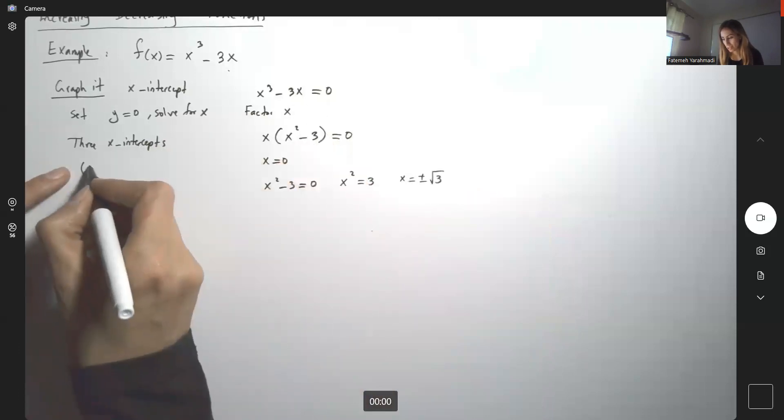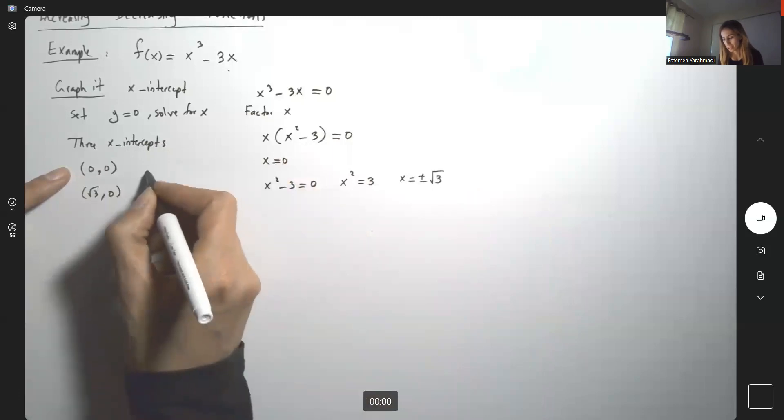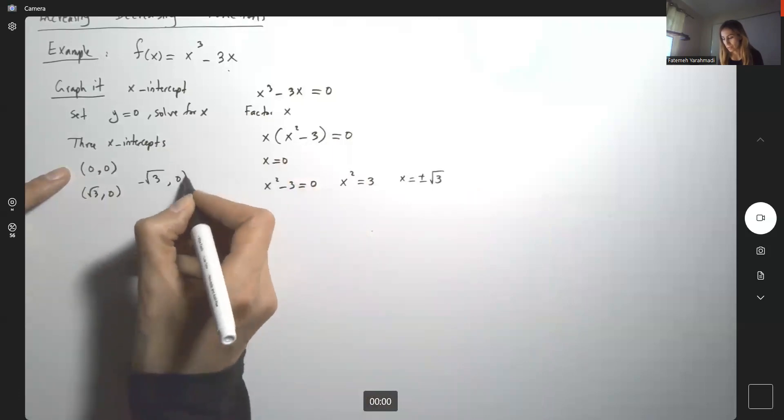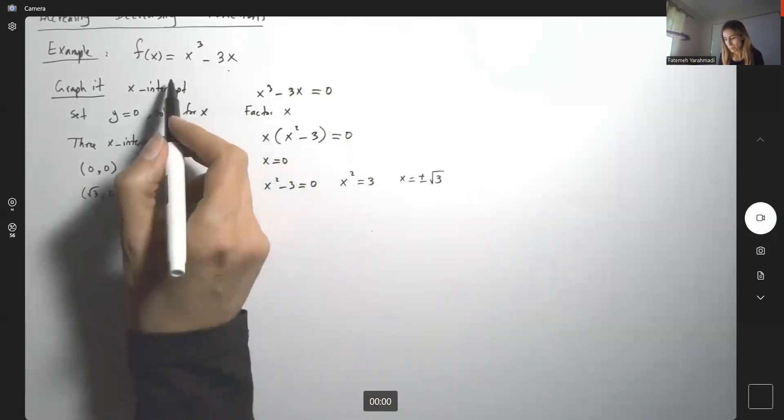One of them is 0, another is √3, and the other is -√3. These are your x-intercepts. Find the y-intercept as well.